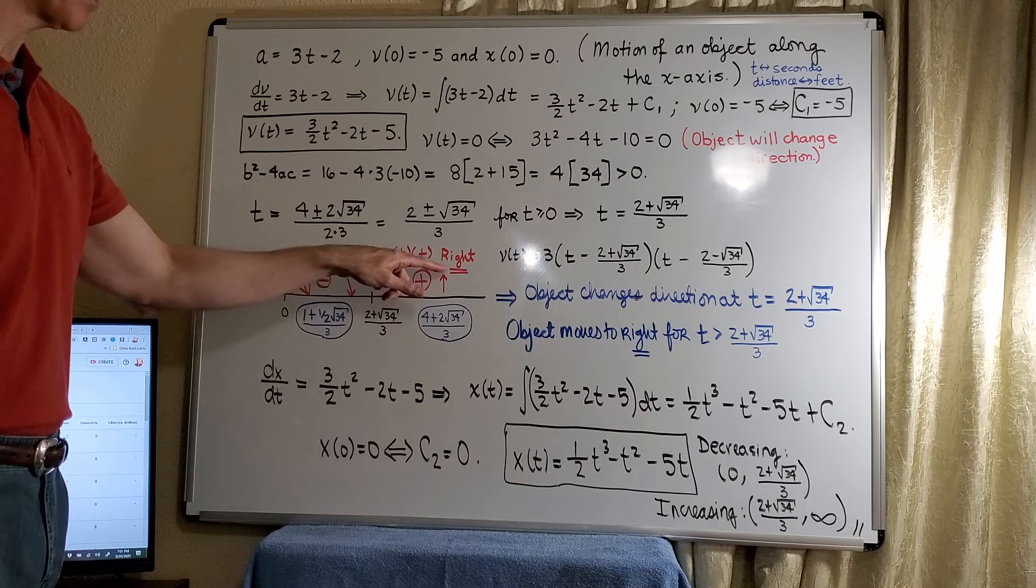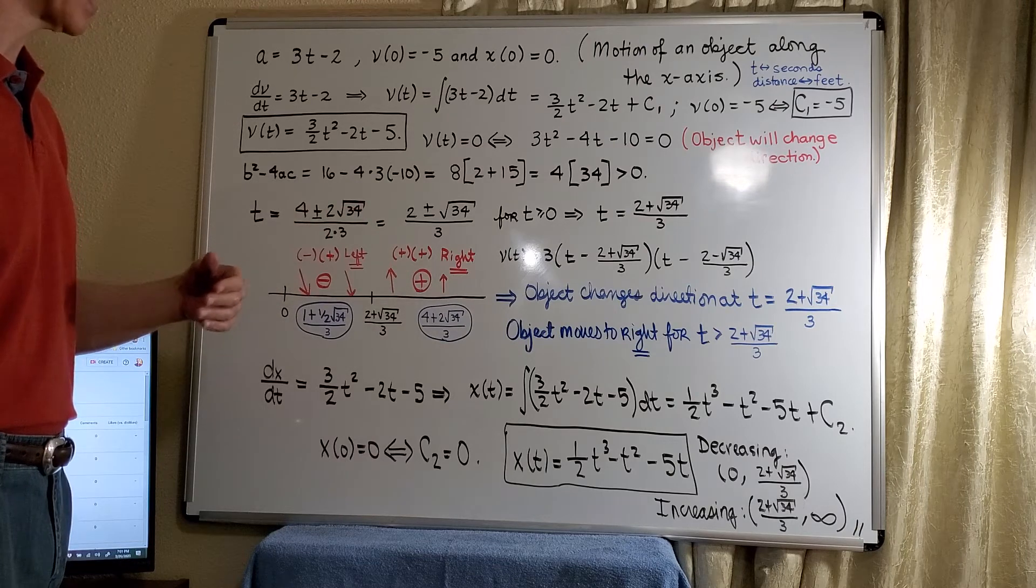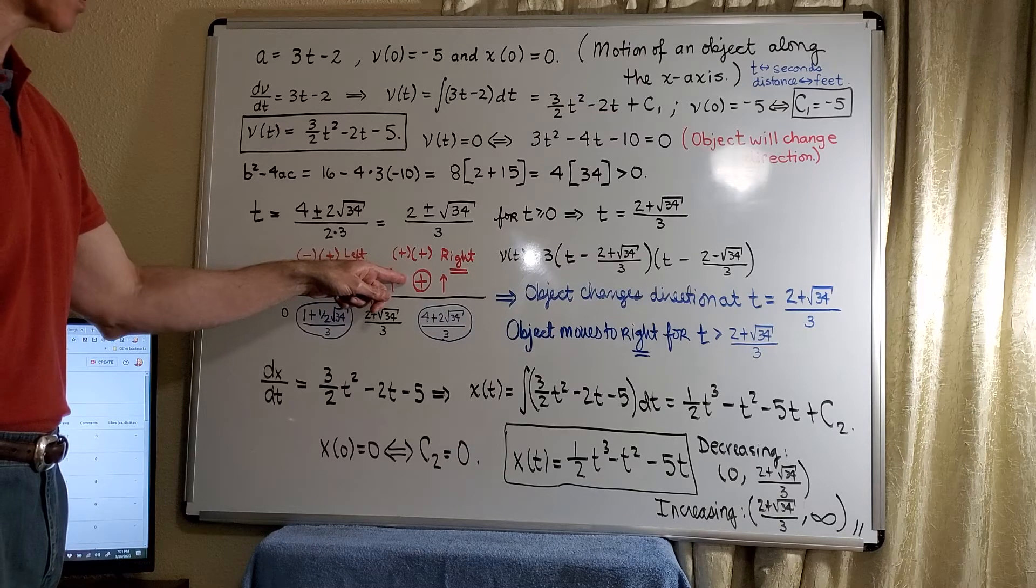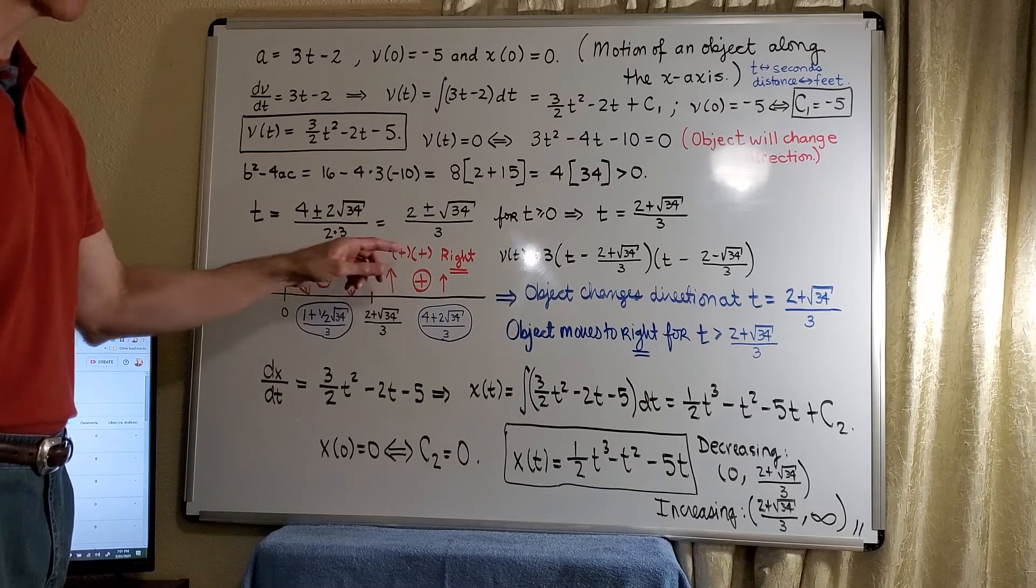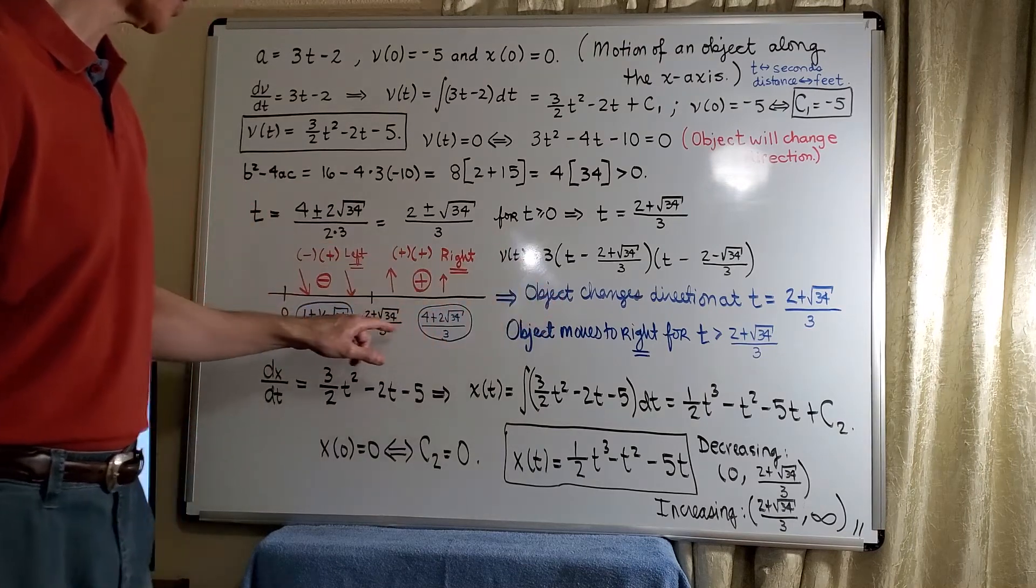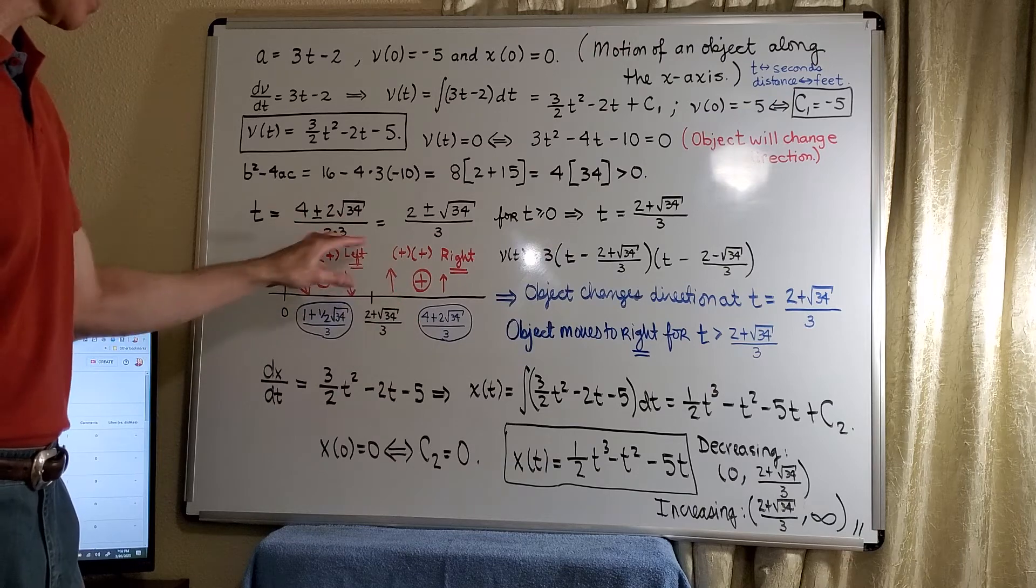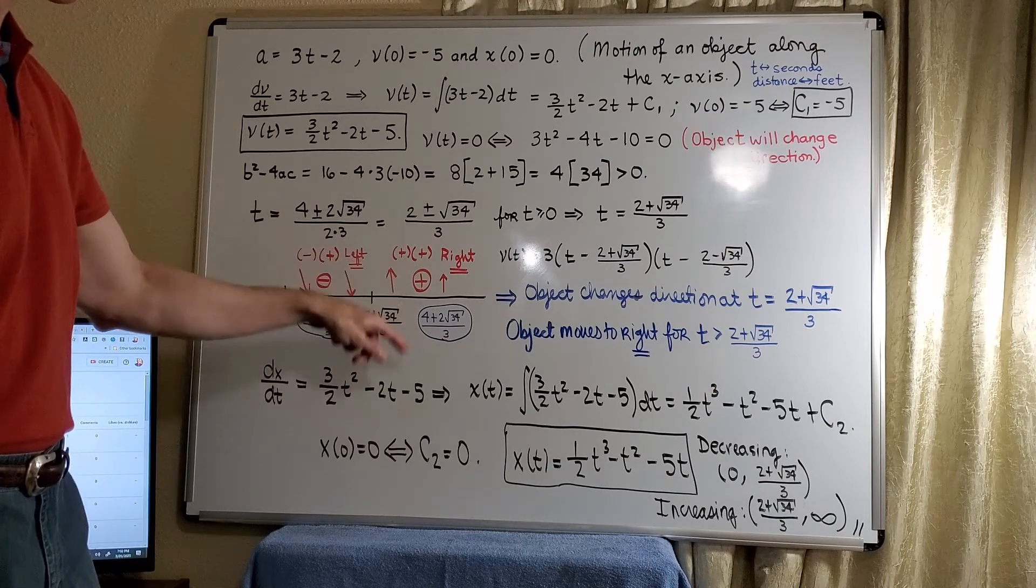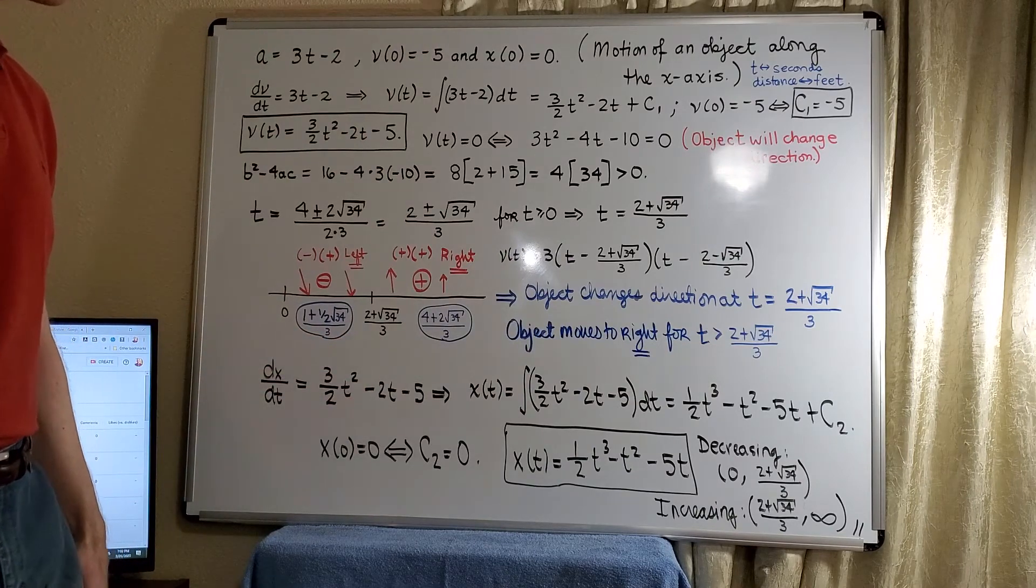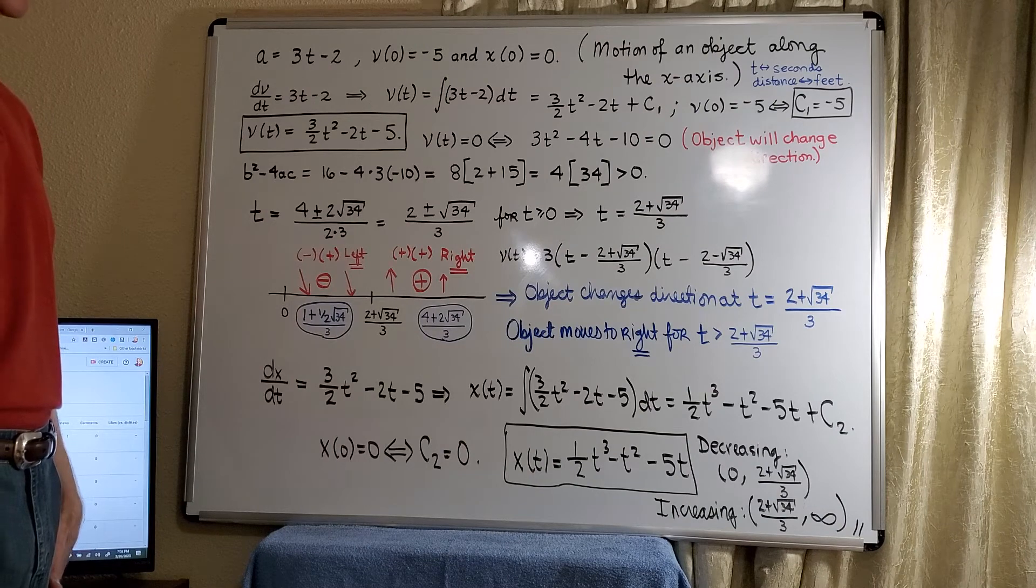So again, in this side, or to the right of this particular zero here, we have a positive. So we know that the velocity is positive and that the object is moving to the right. And then if we think about the position function, we know that the position function would be increasing here. So now basically what we see is the object changes direction at this value of t. And if you like, we can say that it moves to the right for t greater than (2 plus root 34)/3.